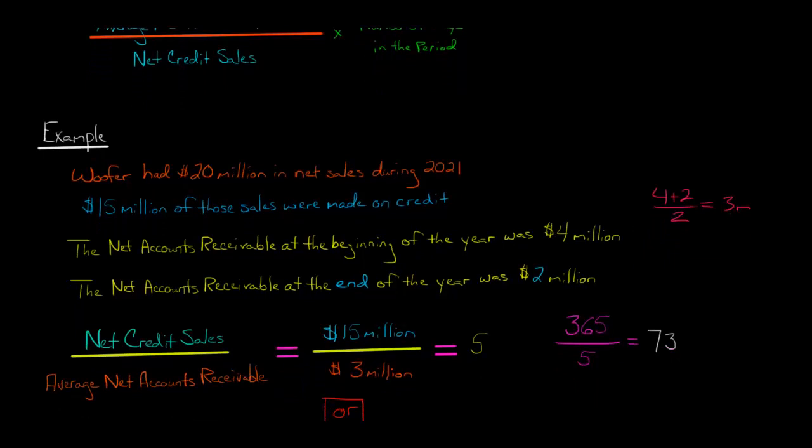Let's calculate the accounts receivable turnover ratio first, and then I'll show you the other way to do it too. The accounts receivable turnover ratio is net credit sales divided by average net accounts receivable. We have $15 million in net credit sales, and we just calculated our average net accounts receivable is $3 million. So our receivables turnover ratio is 5. That means during the year, the company collects its receivables 5 times.